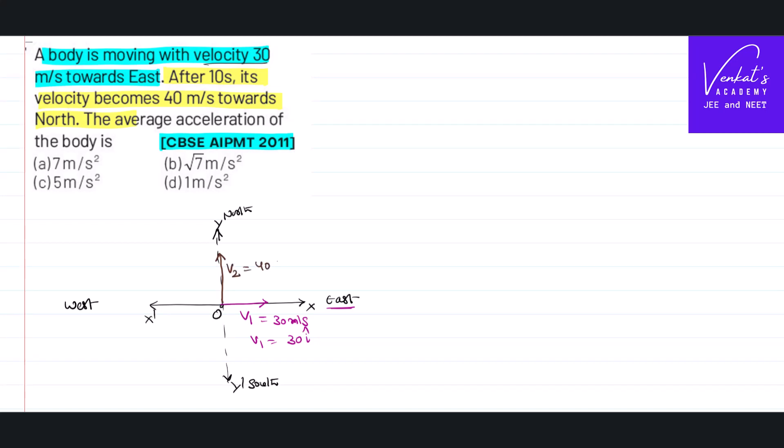This is v2, 40 meters per second. This is positive y-axis, so it can be represented like j cap. For this it has taken a time of 10 seconds. Then what is the acceleration? That's the question being asked. You can say acceleration is rate of change of velocity, dv by dt.